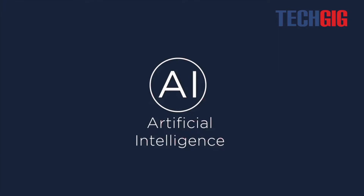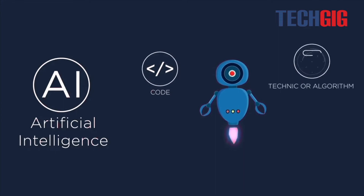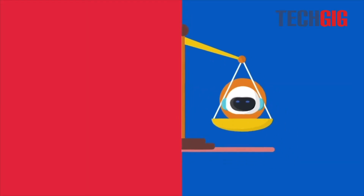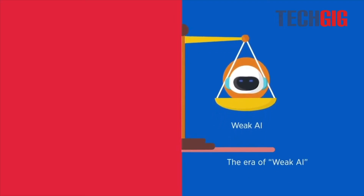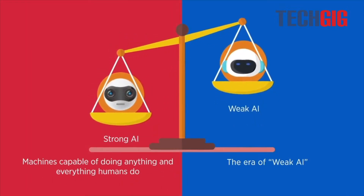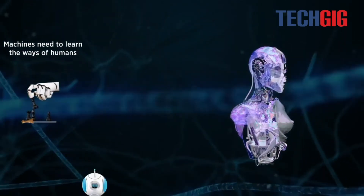Artificial intelligence is basically any programming technique or algorithm that allows machines to mimic, develop, and display human intellect or behavior. We are currently living in the era of weak AI, as many people refer to it. The technology is still in its early stages, but it is predicted to make computers capable of performing anything and everything humans do in the era of strong AI. To transition from weak AI to strong AI, machines must master the techniques and processes used by humans.